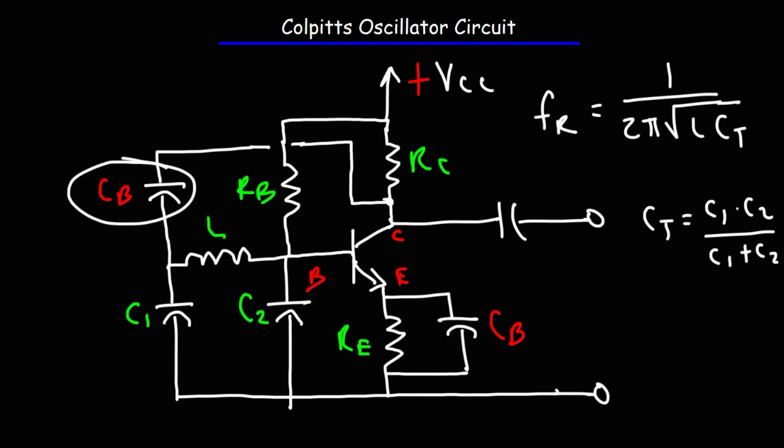The bypass capacitor also serves another purpose. It blocks DC, but it allows AC signals to pass through it.